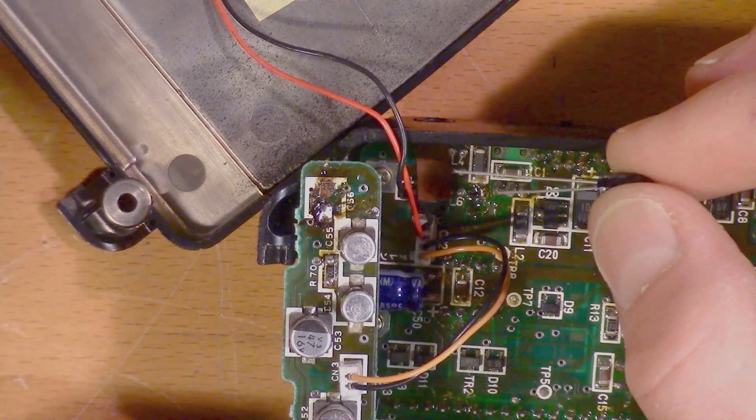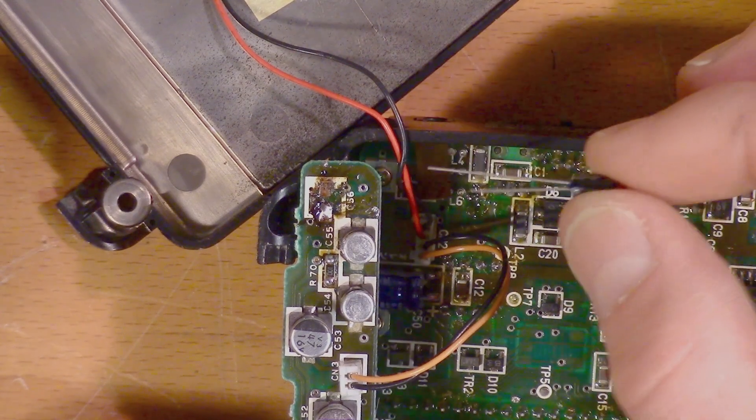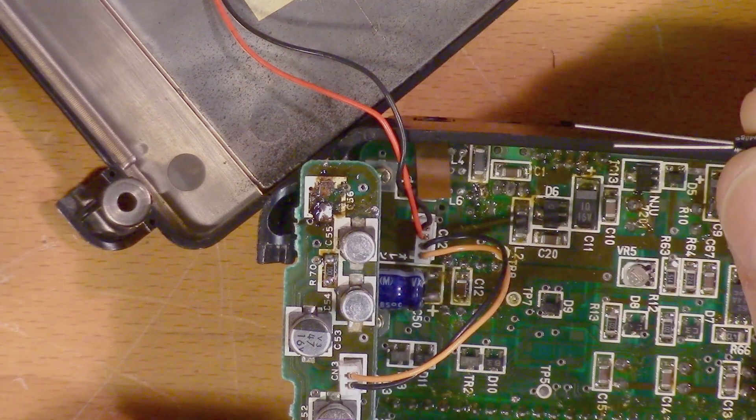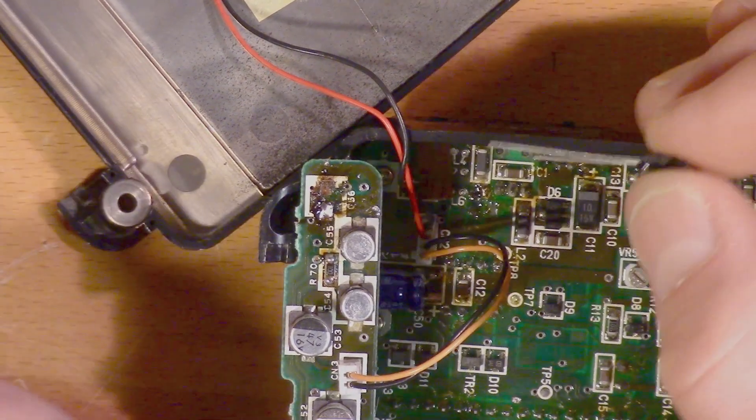So luckily enough, there's two through-hole vias here that you can use to place a standard through-hole capacitor, in case you don't have any surface mount capacitors laying around.